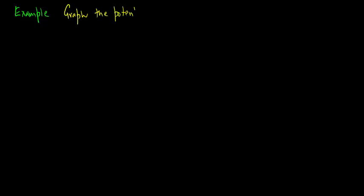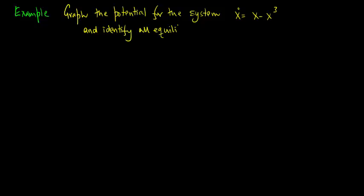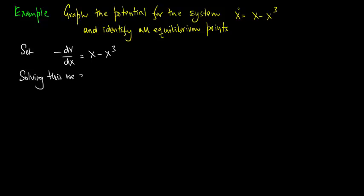Graph the potential for x dot equals x minus x cubed and identify all equilibrium points. We set minus dV dx equal to x minus x cubed and solving this we get V equals minus one-half x squared plus one-fourth x to the fourth plus c1. We let c1 equal 0.